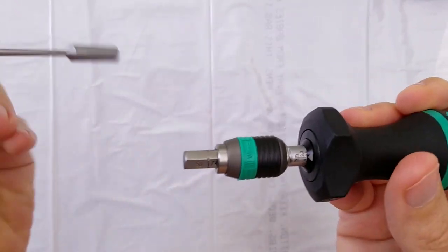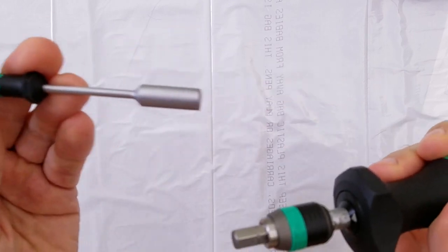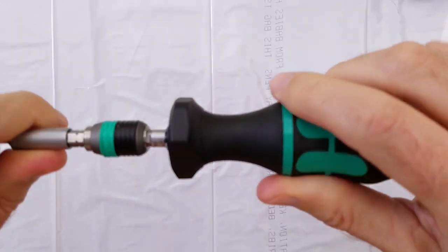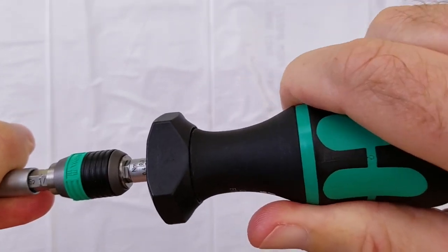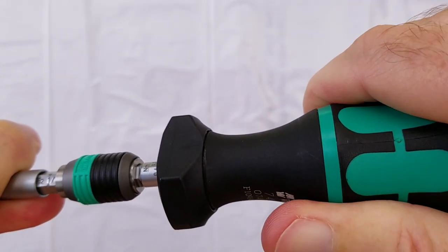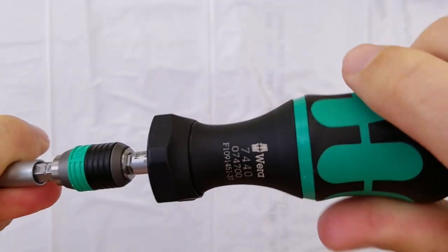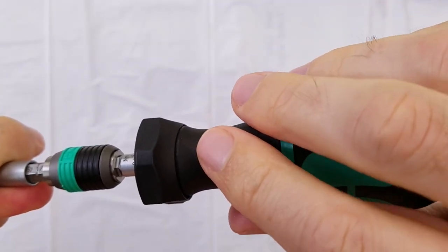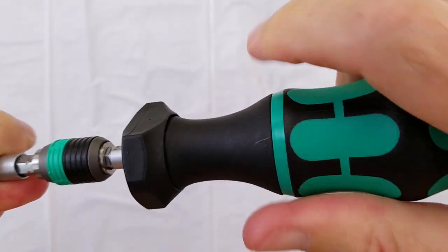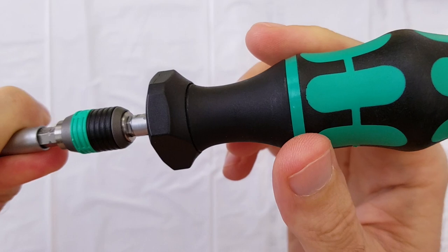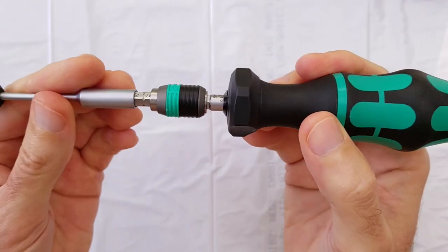In the other hand here, I am going to hold this driver fixed and I am going to apply torque in the clockwise direction with the torque screwdriver. When the torque value is reached, you will hear that click and the handle will jump forward. Click, click, click. That means the torque value has been reached.